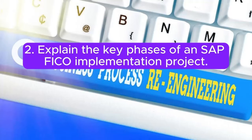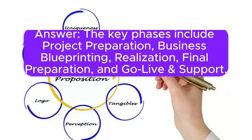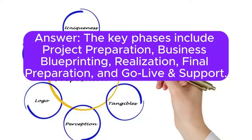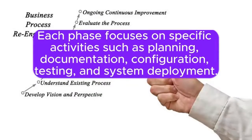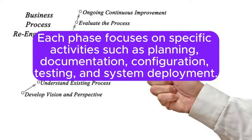Question 2: Explain the key phases of an SAP FICO implementation project. The key phases include project preparation, business blueprinting, realization, final preparation, and go-live and support. Each phase focuses on specific activities such as planning, documentation, configuration, testing, and system deployment.